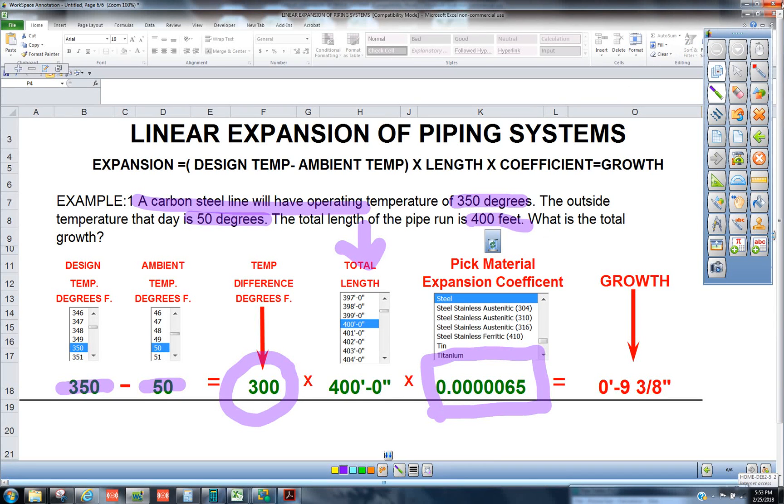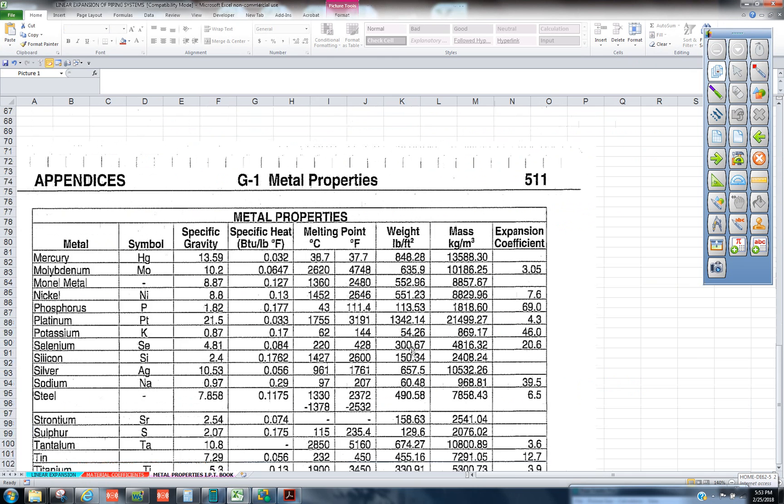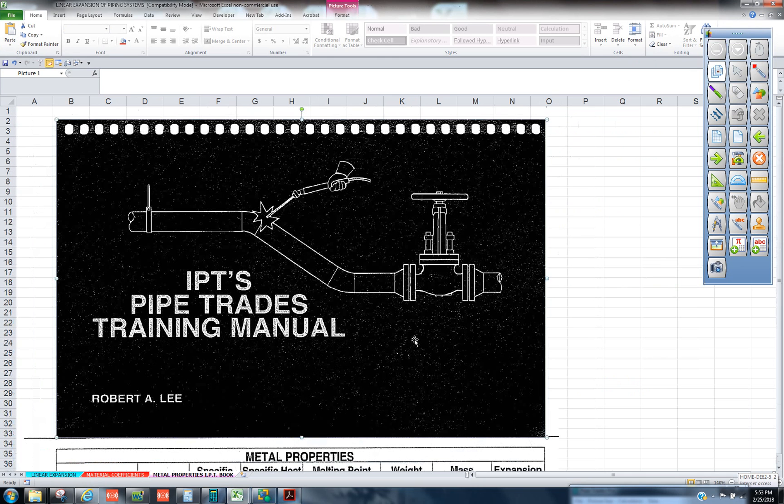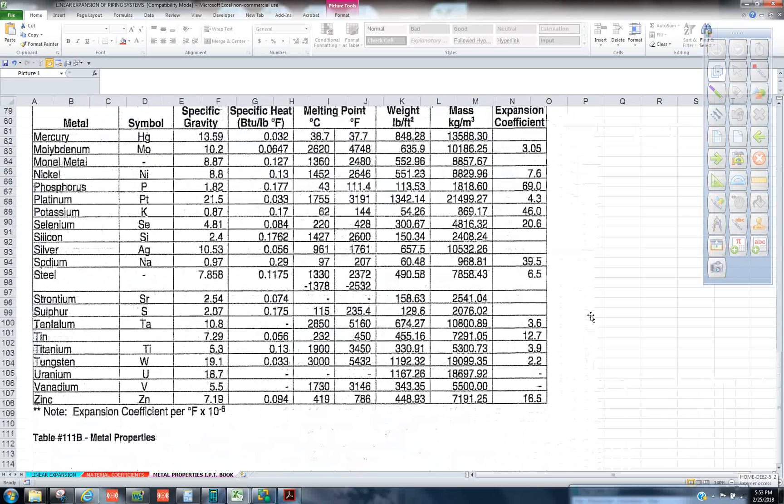The book that we use to get that out of is the IPT Pipe Trades Training Manual by Robert E. Lee. Reference page for that would be 511.